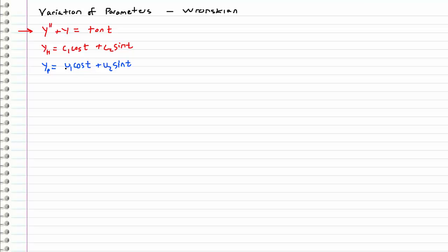So without going through that tedious process to determine u1 and u2, we are going to compute them directly using the Wronskian.